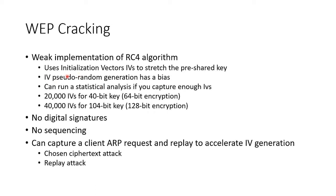If you can capture enough packets, you can figure out the bias — how it leans, how it tilts — by running a statistical analysis. You only need about 20,000 IVs for a 40-bit key (which with a 24-bit IV makes it 64-bit), or about 40,000 IVs for a 104-bit key (making it 128-bit). It doesn't take long to capture these — just a couple of minutes — and less than a minute to crack.